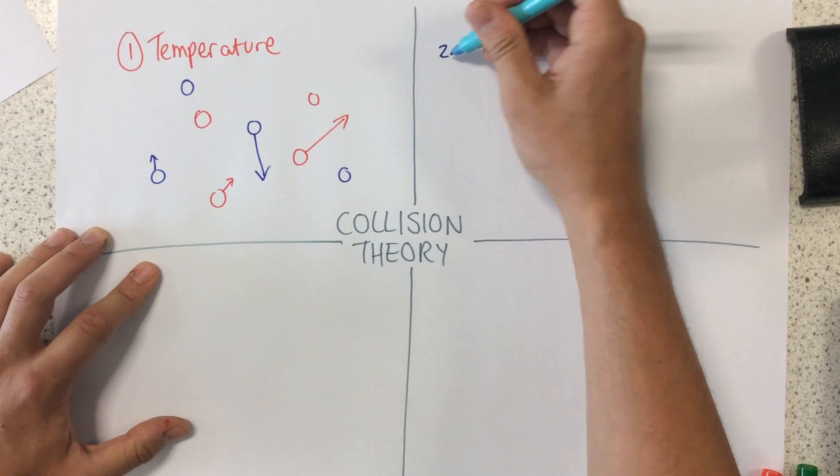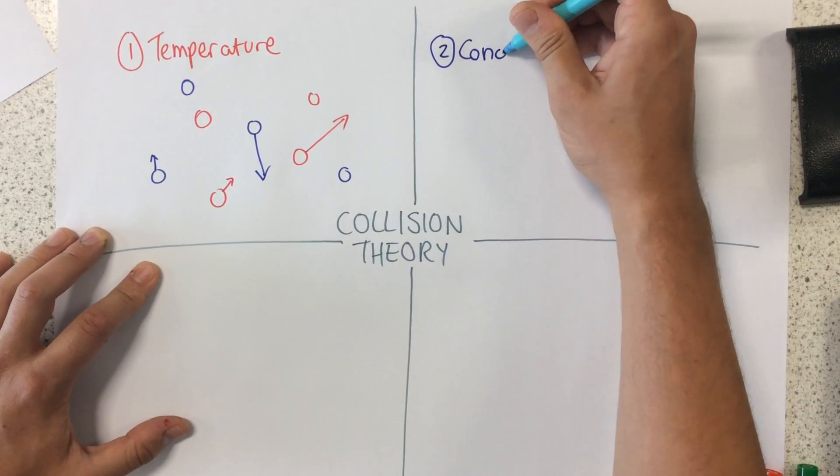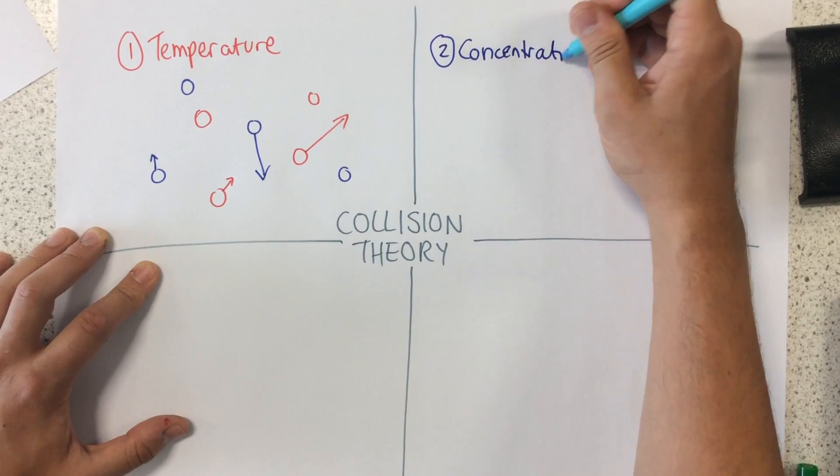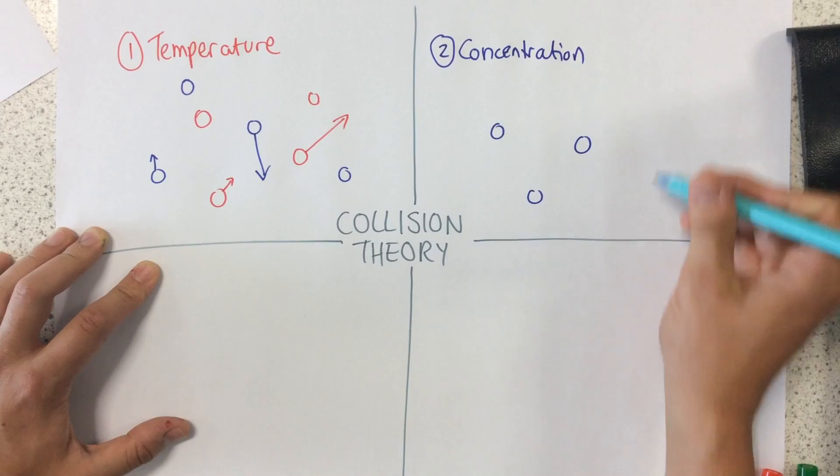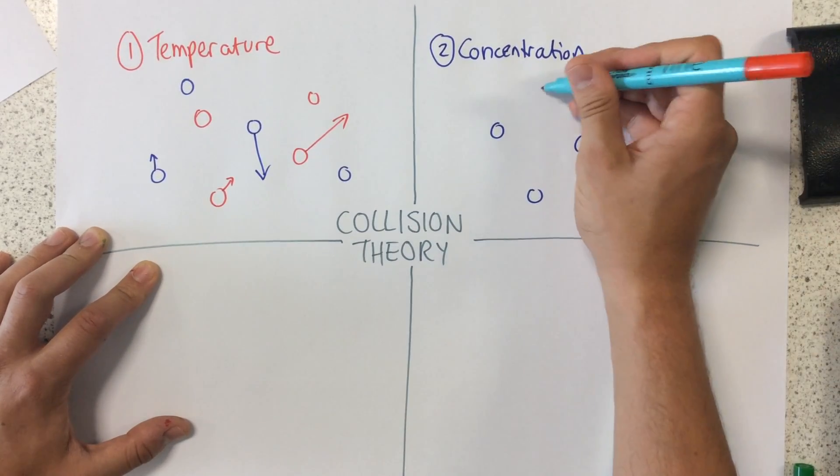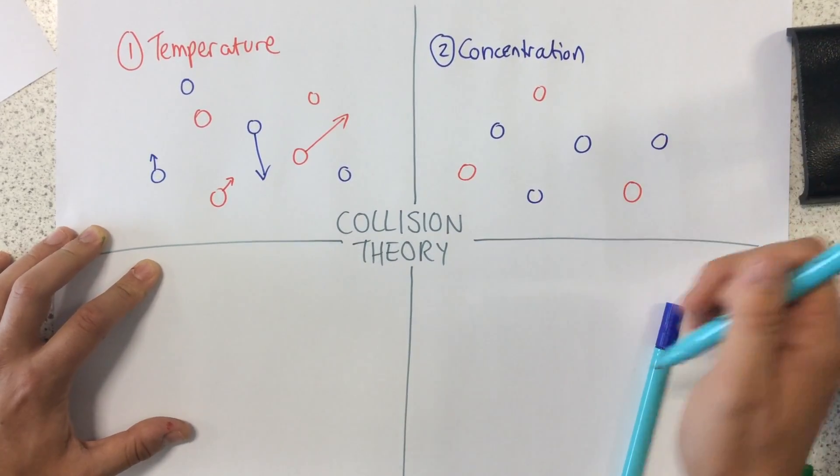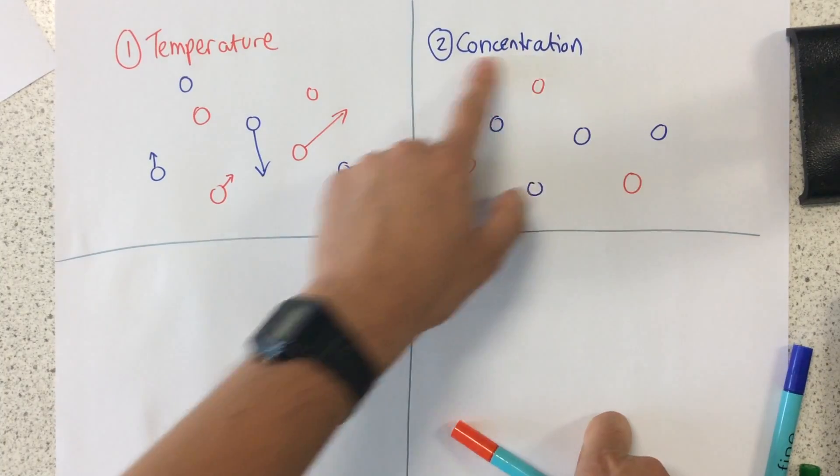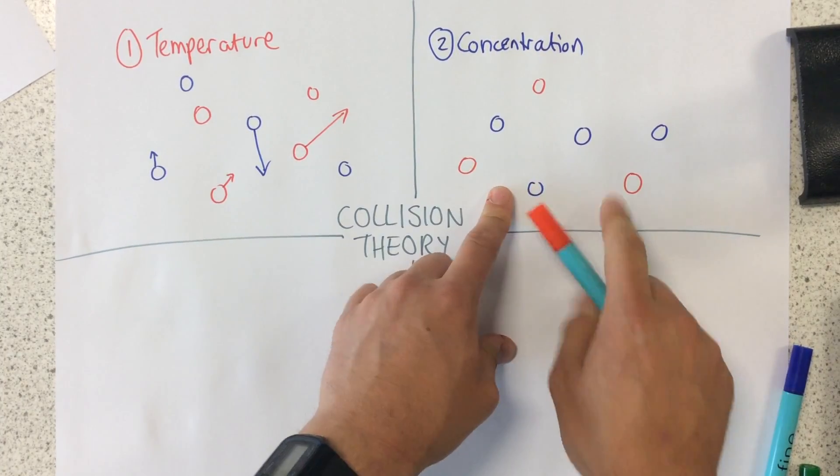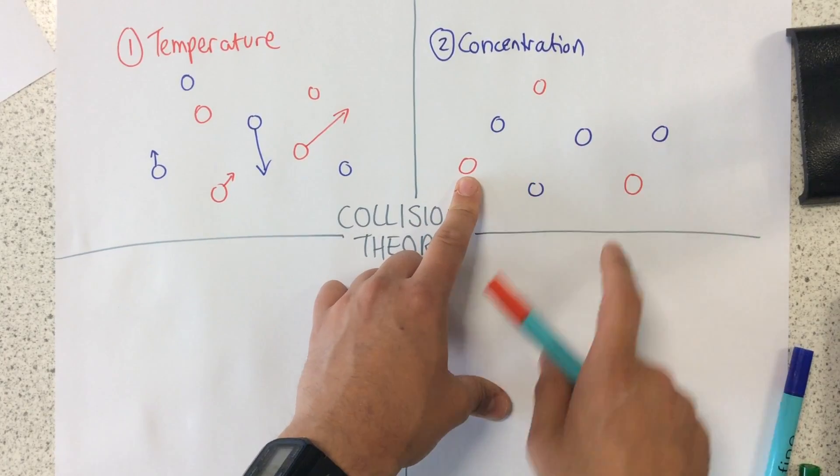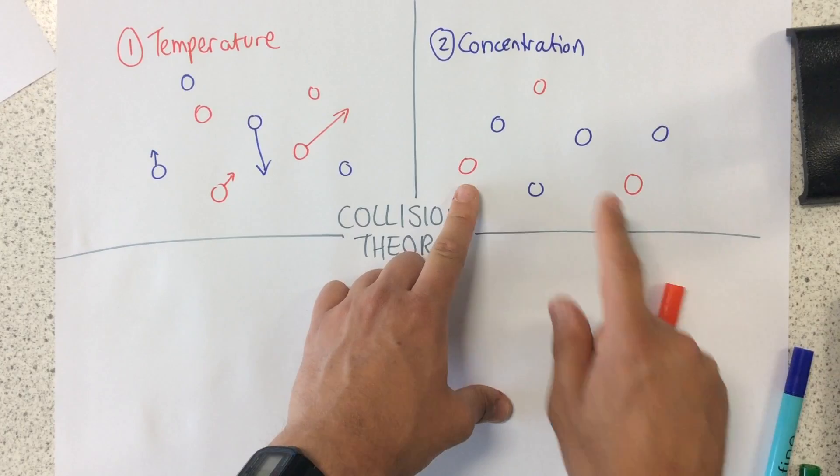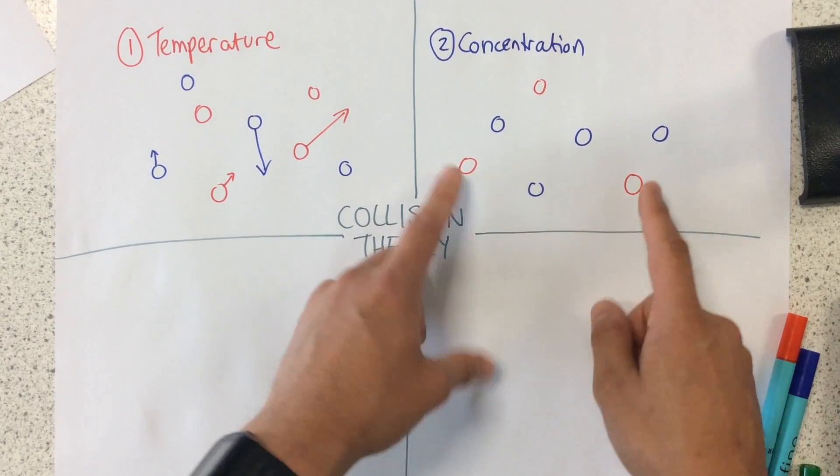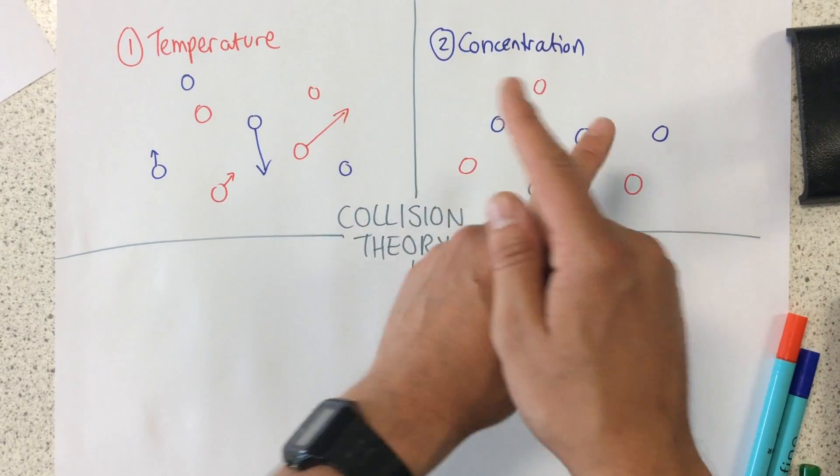The second thing we need to know about is concentration. All concentration means is how many particles we have within a particular volume. So let's imagine this right here. At the moment, we have a relatively low concentration of these particles, meaning there's not many of these particles within this volume. This means that there's not going to be very frequent collisions.